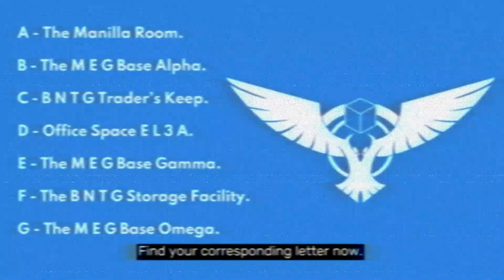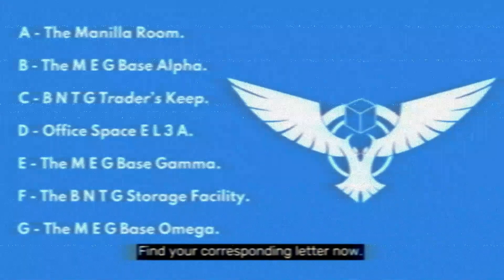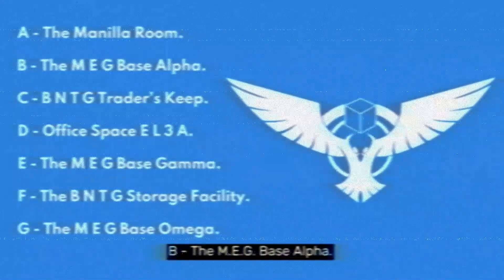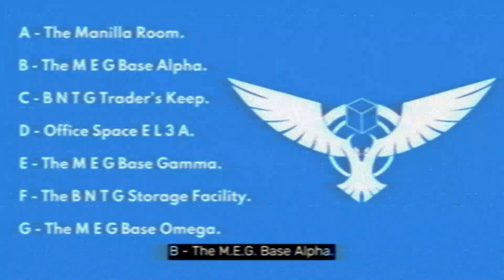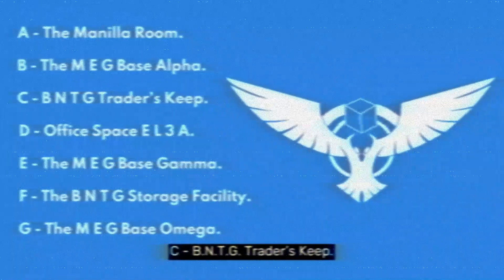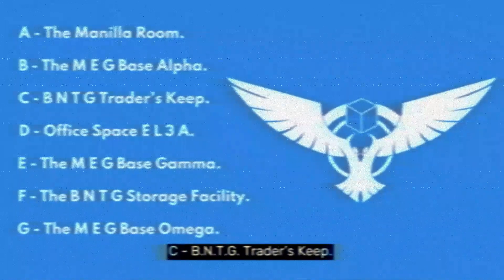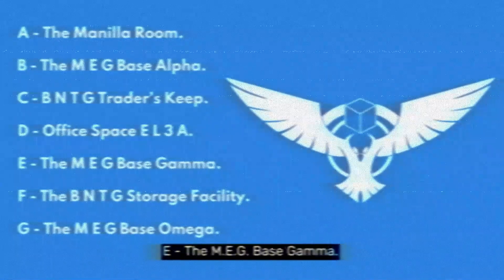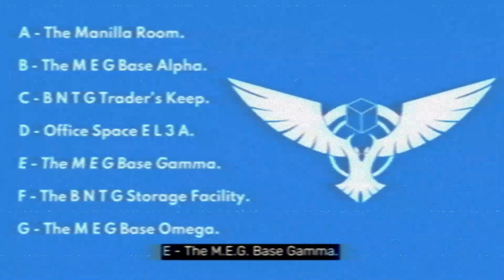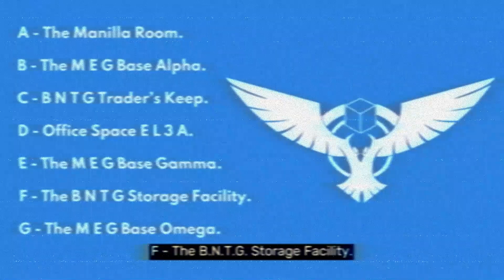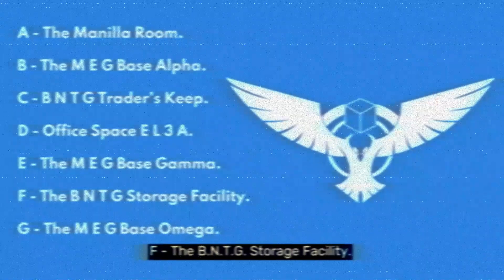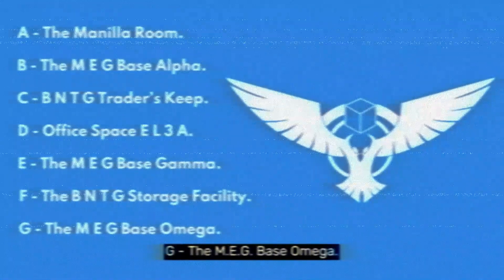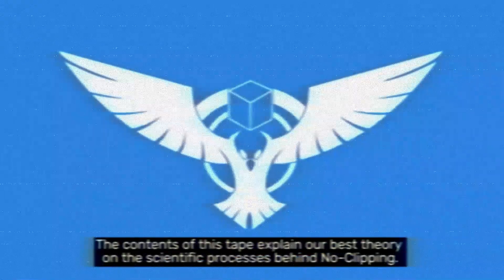Find your corresponding letter now. A: the Manoa Room. B: the Meg Base Alpha. C: BNTG Traders Keep, the office space. D: El3A. E: the Meg Base Gamma. F: the BNTG Storage Facility. G: the Meg Base Omega.